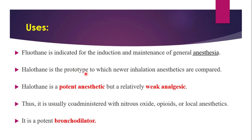Halothane is a prototype drug. Prototype means it is considered an ideal drug — it is the very first version, and all other general anesthetics are derived from or compared to it. Halothane is a potent anesthetic, but it produces relatively weak analgesia. Since analgesia is the first stage of general anesthesia — followed by excitement stage, surgical anesthesia, and paralysis stage — Halothane is usually co-administered with other agents to first achieve analgesia.